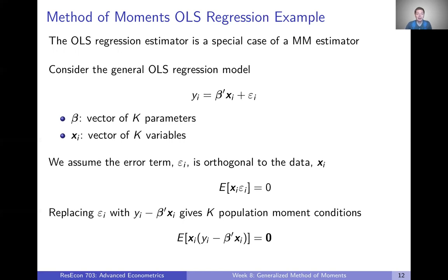That's a simple example. Let's look at something a little more realistic for an econometrics application — the OLS regression. It turns out the OLS regression estimator is actually a special case of a method of moments estimator. So let's consider the general OLS regression model. Y sub i, some outcome observation, is a linear combination of parameters beta and some data x, plus an idiosyncratic error term epsilon. Beta and x have to have the same dimensionality — we're going to say there are k parameters in beta and k variables in x.